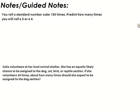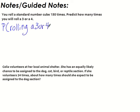We have a standard number cube. We're going to roll it 150 times. We want to predict how many times you will roll a 3 or a 4. So the first thing we have to do is find the probability of rolling a 3 or a 4.